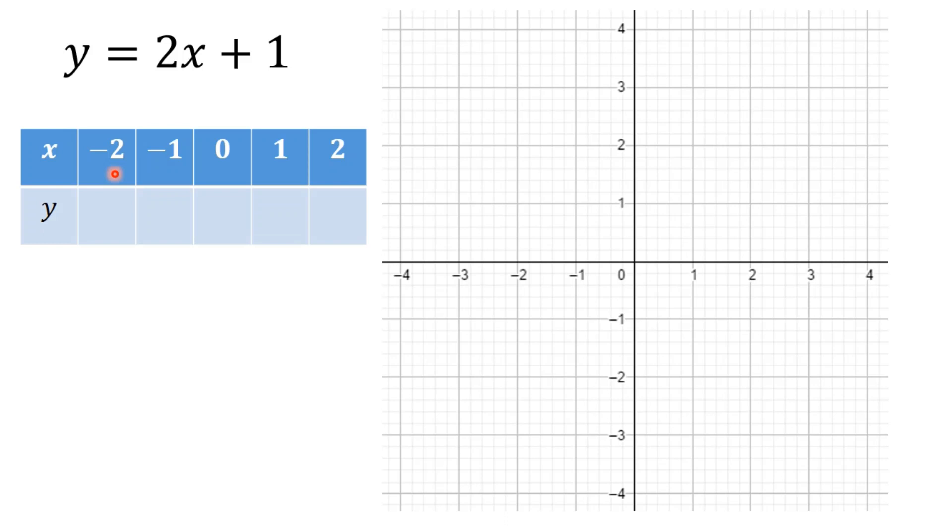So if we've got x as -2, I can substitute that into my original equation. 2 times -2 plus 1. That's -4 plus 1, which is -3. And that then gives me a coordinate to plot. We've got x as -2, and y is -3. So we can go -2, -3, and that's where my coordinate is going to go.